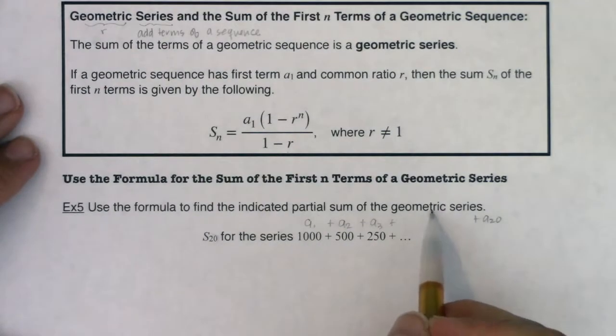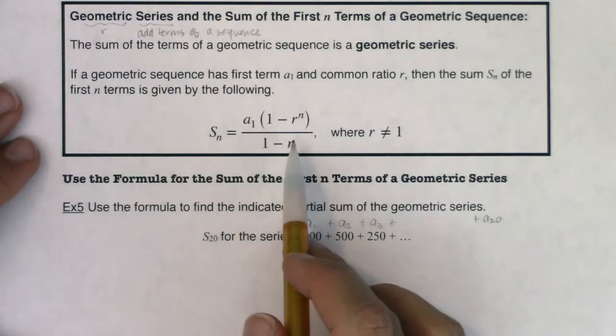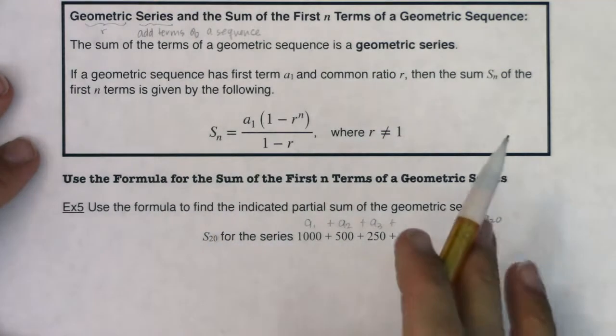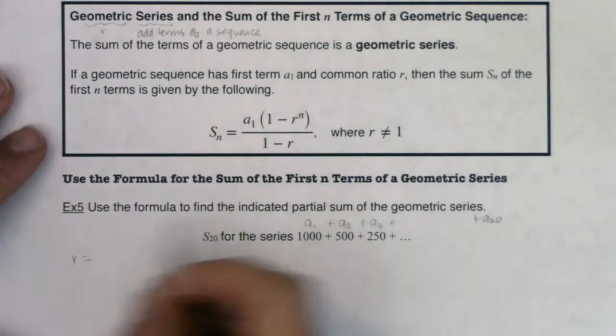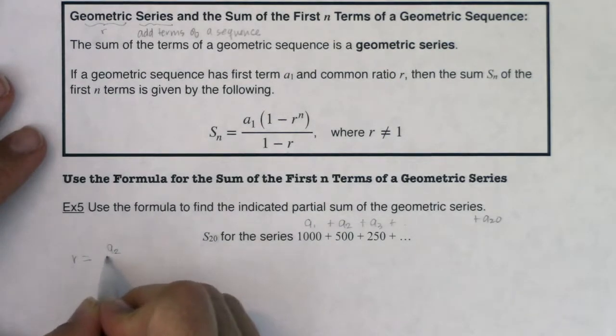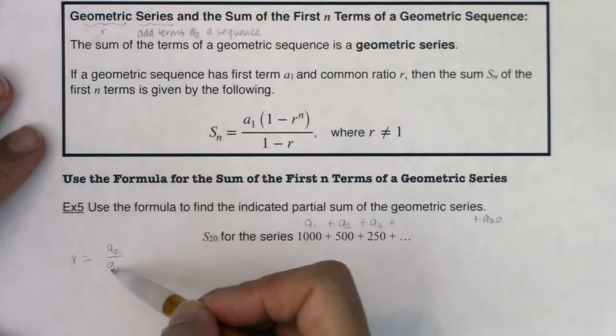So I've got a geometric series. It's stated here, which means we need to be able to find the common ratio. All right, I would like to find that r value because that will be extremely helpful moving forward. Well, how do I find that common ratio?